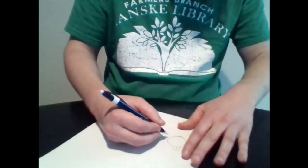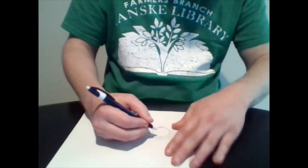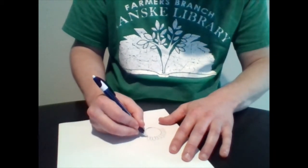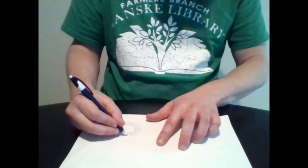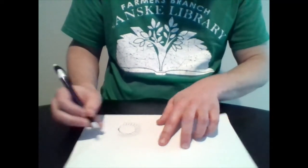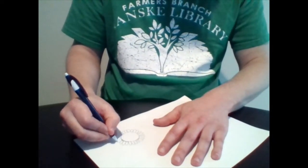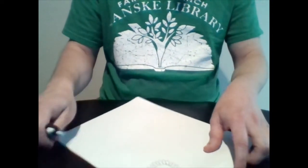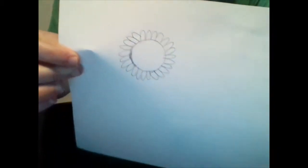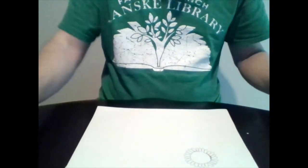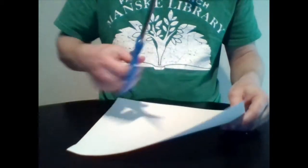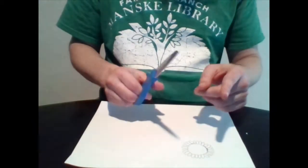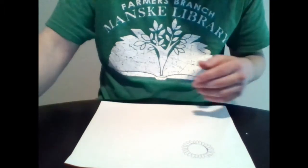Then you're going to draw some petals around the circle and you can make them as big or small as you want. The ones you saw in my example earlier are pretty small but you can make them pretty big. Once we get all the petals drawn it'll look something like this and then you're going to cut it out.